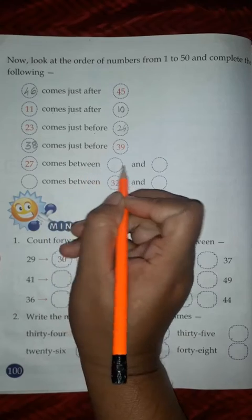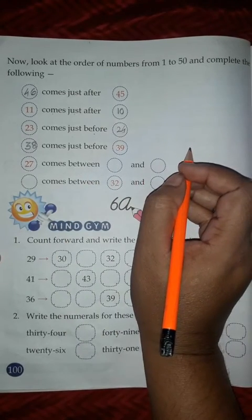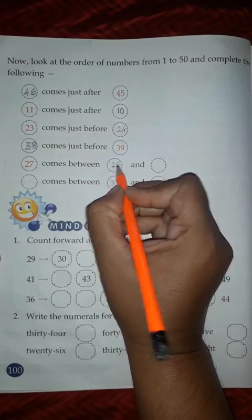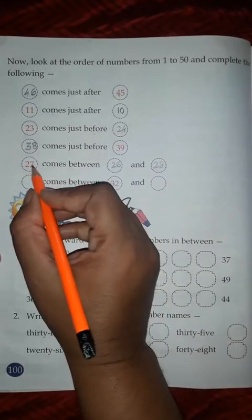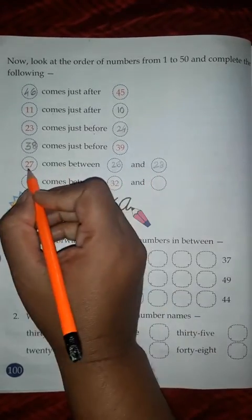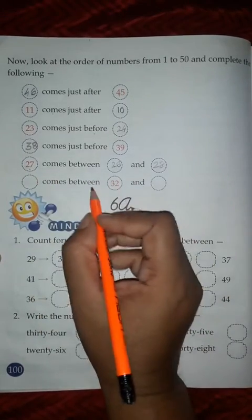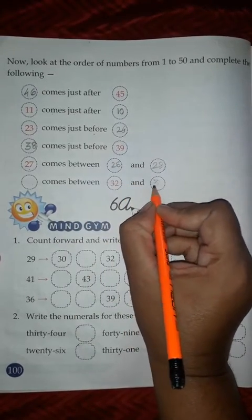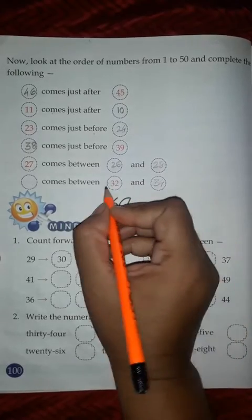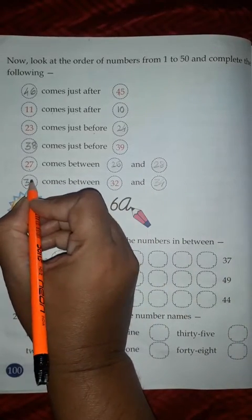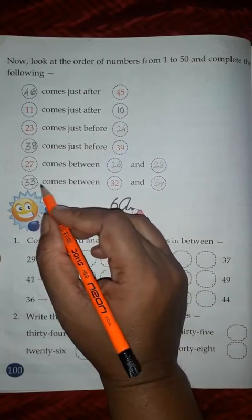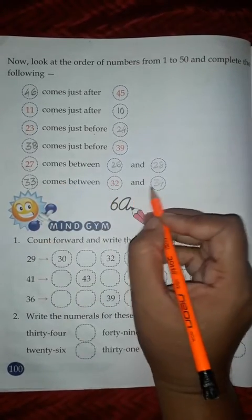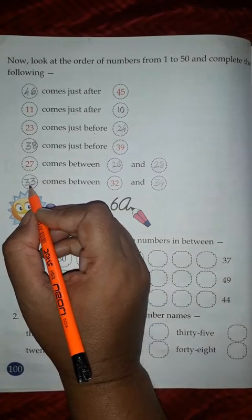27 comes between - 27 comes between 26 and 28. What number comes between 26 and 28? 27. OK, blank comes between 32 and 34. Between 34 and 32 comes 33. 33 comes between 32 and 34. OK.